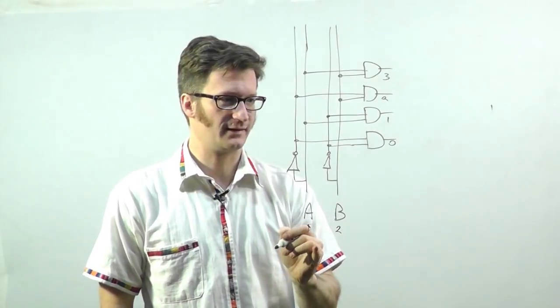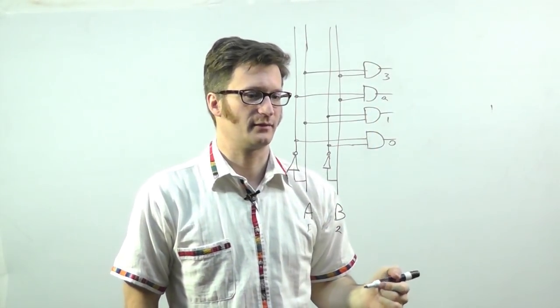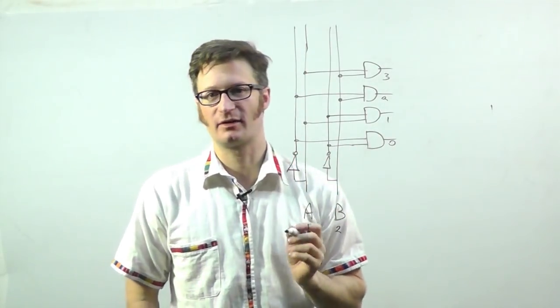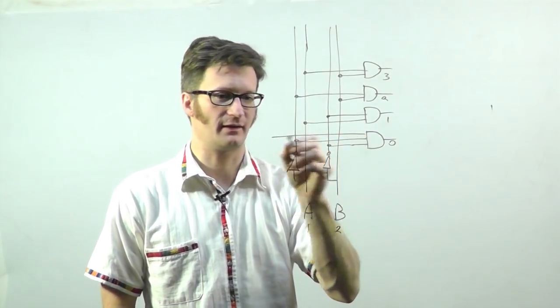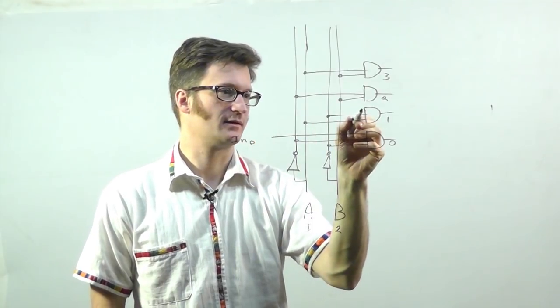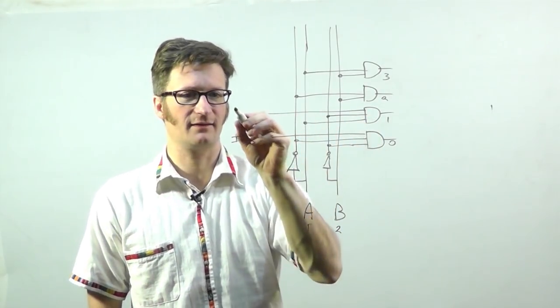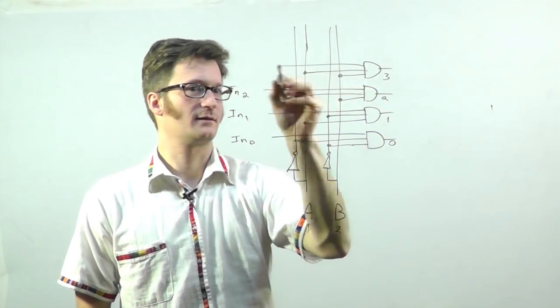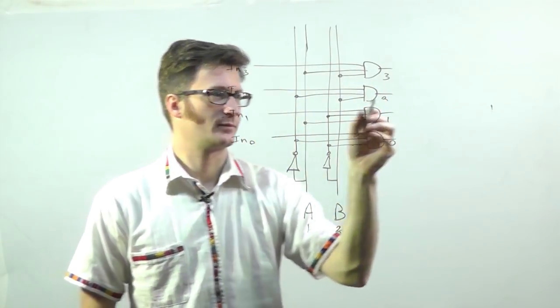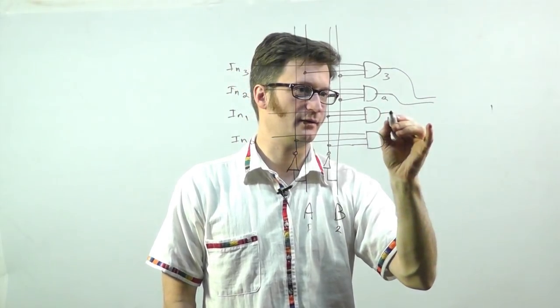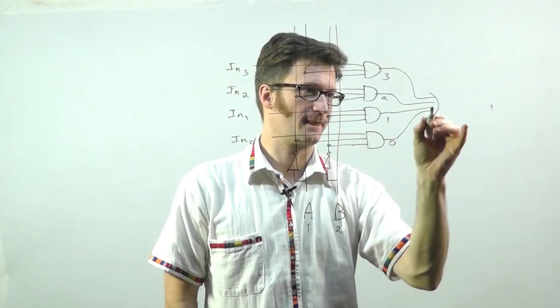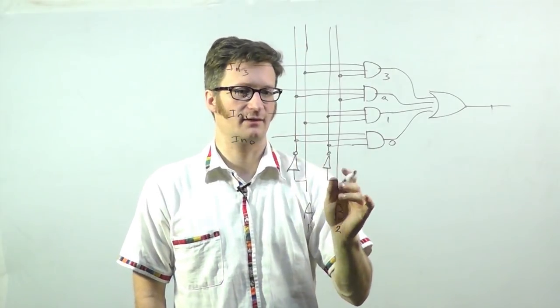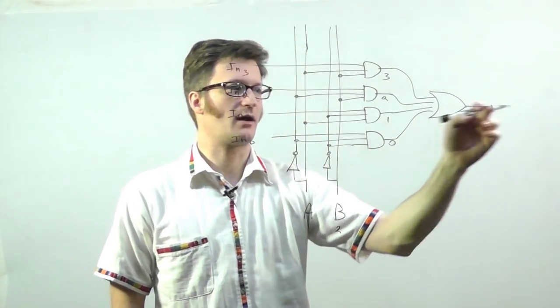Okay. Now, this is a decoder. It has two select inputs, four data outputs, or four outputs. In order to turn this into a multiplexer, what I do is I have one more line coming into those AND gates. And then, they all go into an OR gate. So, I can select which input is going to be routed to the output.